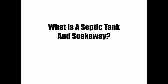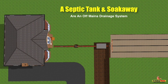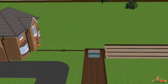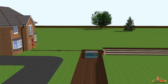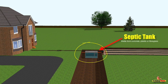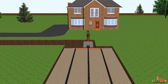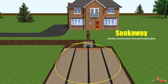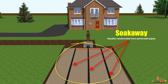So what is a septic tank and soak away? A septic tank and soak away are for properties not connected to mains drainage. A septic tank can be made from concrete, plastic or fibreglass. Soak aways are generally constructed from perforated pipe, gravel or soak away crates.